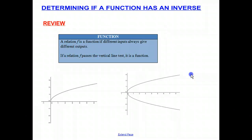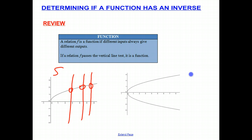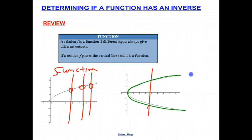The graph on the left passes the vertical line test — it is a function because for every one value of x, there's just one value of y, no matter where you draw the vertical line. The green graph, on the other hand, is not a function because it fails the vertical line test: for one value of x, there are two values of y.